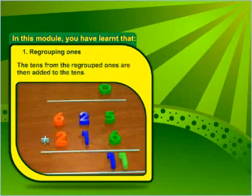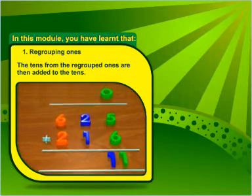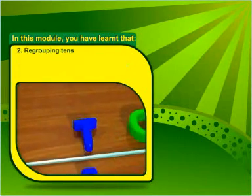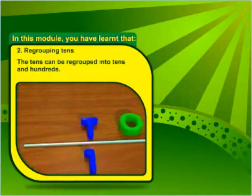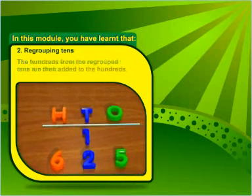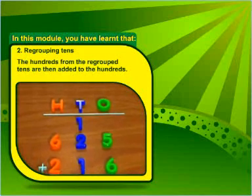The tens from the regrouped ones are then added to the tens. Regrouping tens: The tens can be regrouped into tens and hundreds. The hundreds from the regrouped tens are then added to the hundreds.